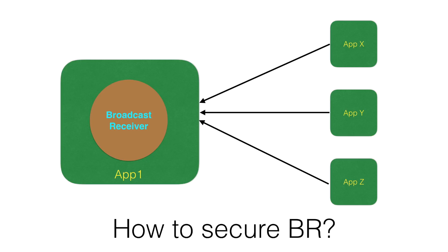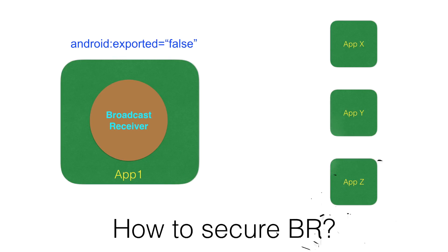For that, you can make use of an attribute called exported. When you register your broadcast receiver in the manifest file, declare it with the exported attribute set to false. This will prevent the broadcast receiver from reacting to any broadcast intent coming from outside the app. This is one aspect of securing your broadcast receiver.